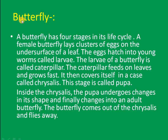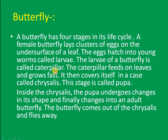Now let's learn about the life cycle of a butterfly. A butterfly has four stages in its life cycle. A female butterfly lays a cluster of eggs on the underside of leaves. The eggs hatch into young ones called larvae.